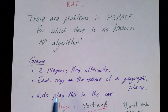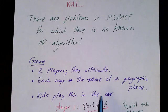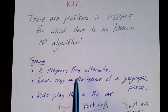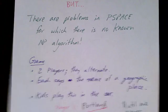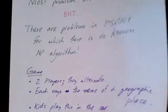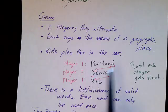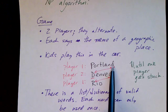To introduce this problem, I'm going to talk about a game that kids might play while they're on a long trip riding in the back seat of a car. Here's how the game works: there are two players and they alternate. Each player, when it's his or her turn, says the name of a geographic place such as the name of a city. The next player has to say another city name that begins with the letter that the first city or the previous city ended with.